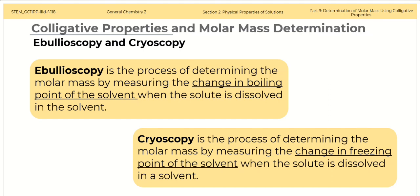Based on colligative properties, these methods are ebulioscopy and cryoscopy. Ebulioscopy is the process of determining the molar mass by measuring the change in boiling point of the solvent when the solute is dissolved in the solvent. Cryoscopy is the process of determining the molar mass by measuring the change in freezing point of the solvent when the solute is dissolved in the solvent.